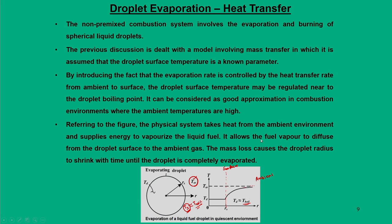This energy allows the fuel vapour to diffuse from the droplet surface to the ambient gas, which means mass loss. When the droplet evaporates there is a mass loss; this mass loss causes the droplet radius to shrink with time until the droplet is completely evaporated.